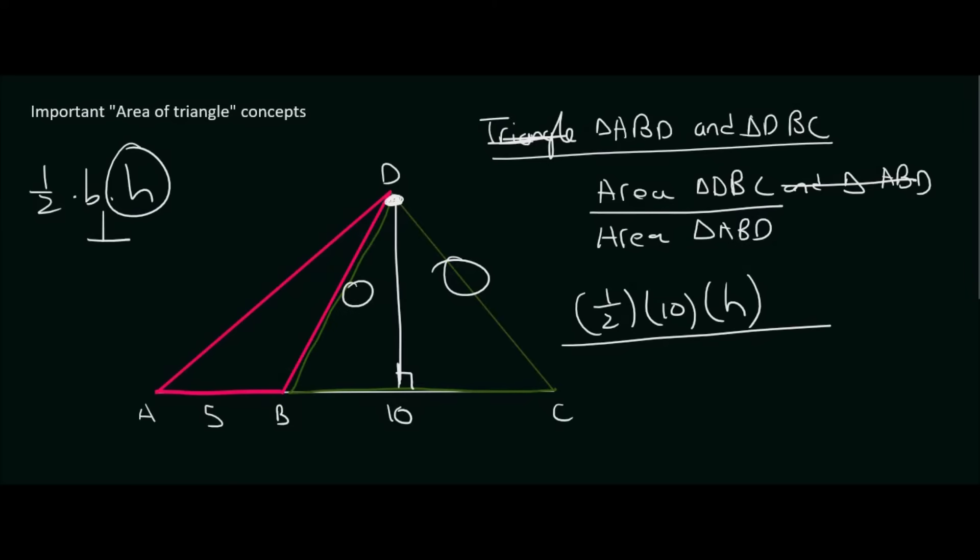If I look at triangle ABD, I know that its base is 5. Now what would that triangle's height be? Well I know that I need to go to the highest point on that triangle, and that's also going to be here.